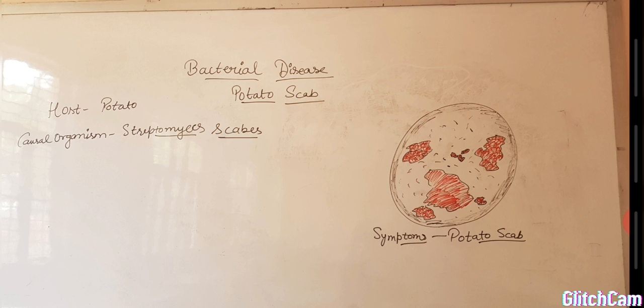Scab is caused by a group of filamentous bacteria. Now we come to causal organism. Jeisa ki bataya, bacterial disease hai. Kaun sa bacteria karta hai disease cause? Streptomyces scabies. Scab is caused by a group of filamentous bacteria. Scab is caused by a group called actinomycetes which commonly occur in soil with a pH above 5.5. Streptomyces scabies is usually responsible for common scab and is capable of causing all type of scab lesions described previously.